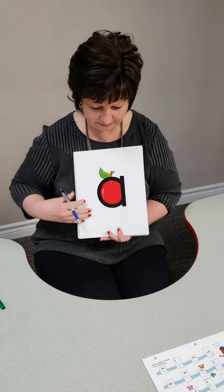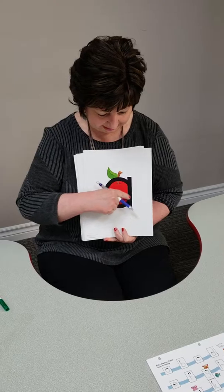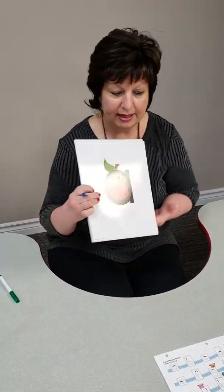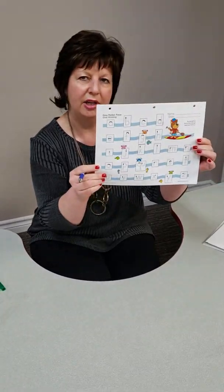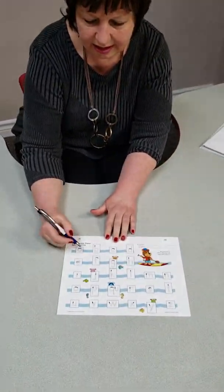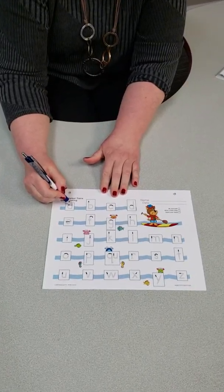We just finished the jumbo trace-over cards where we're tracing over the letters with our finger, and now we're going into the printing pages. We have three different types of printing papers. This is called easy marker trace-over printing, and you can see that the starting spot is here for the A.